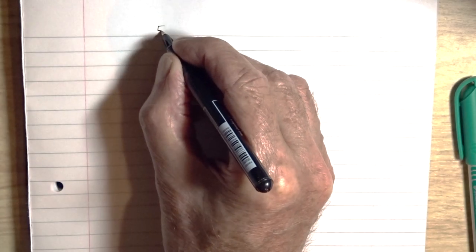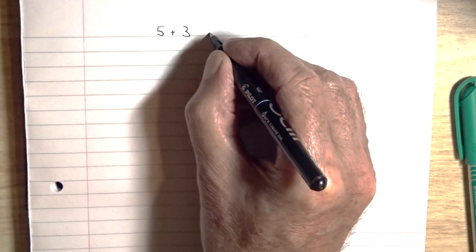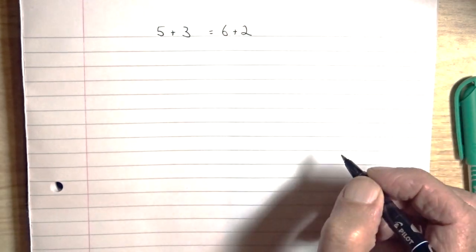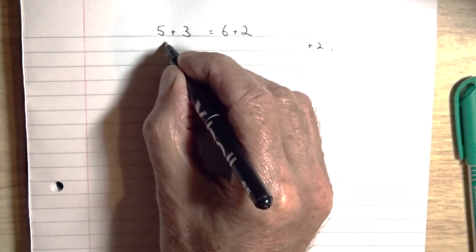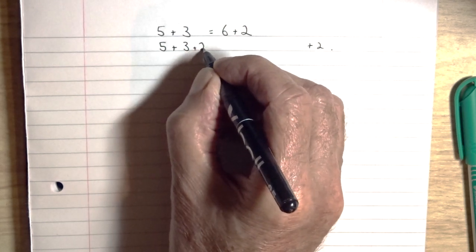It's easier to start with simple number equations rather than to get straight in with the algebra. 5 plus 3 equals 6 plus 2, both of course equal 8. We can add 2 to both sides.